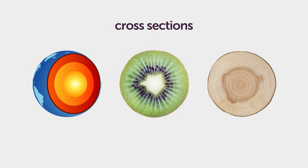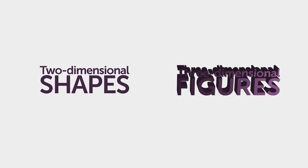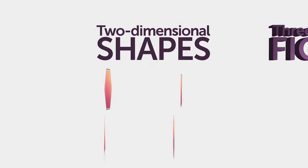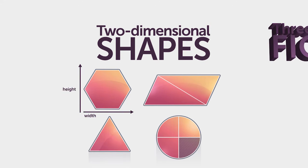Before you can understand cross sections, you must be able to decipher between two-dimensional shapes and three-dimensional figures. Two-dimensional shapes, also referred to as 2D, are flat figures. They have only two dimensions, as seen in the shapes pictured.